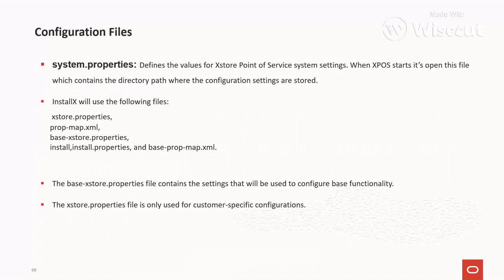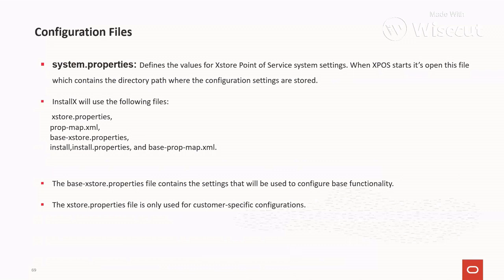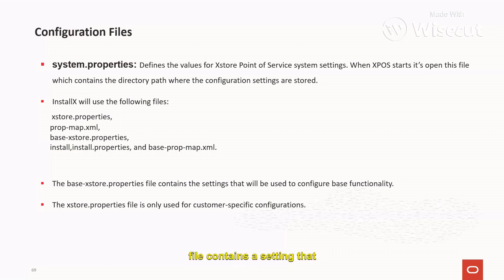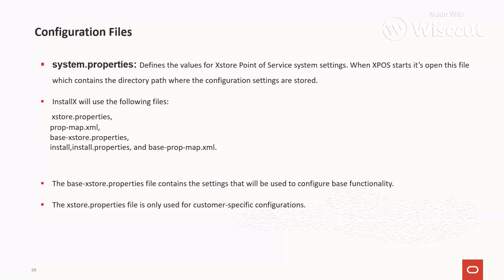The system.properties file is another very important file for configuring the Access Store system. When the Access Store process starts, it opens this file, which contains the directory path where configuration settings are located. Internally it uses access_store.properties, install.properties, and base-proc-map.xml. The base file contains settings for base functionality, while access_store.properties is used only for customer-specific configuration — any implementation-specific changes should be made there.